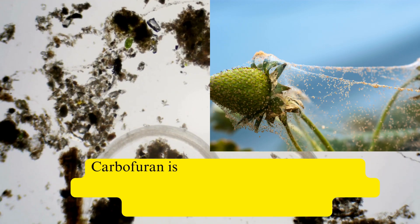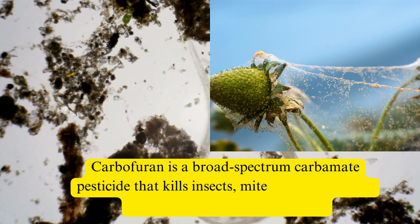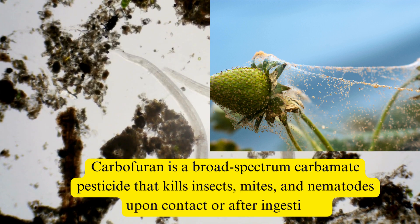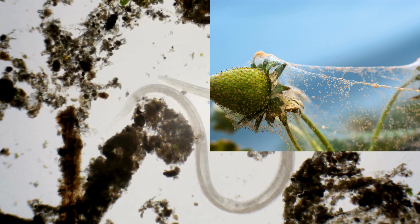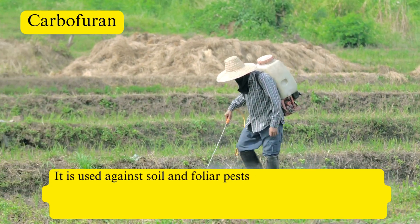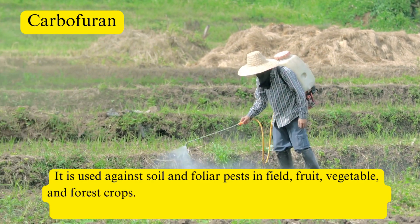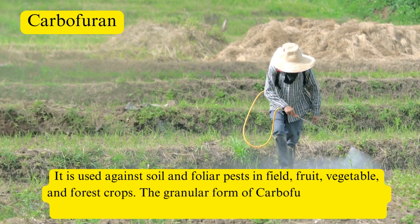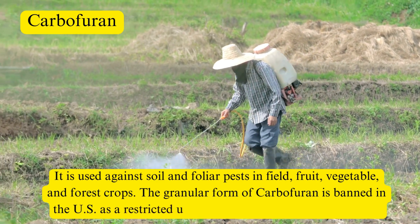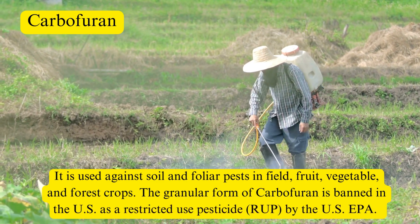Carbofuran is a broad-spectrum carbamate pesticide that kills insects, mites, and nematodes on contact or after ingestion. It is used against soil and foliar pests in field, fruit, vegetable, and forest crops. The granular form of carbofuran is banned in the U.S. as a restricted-use pesticide (RUP) by the U.S. EPA.